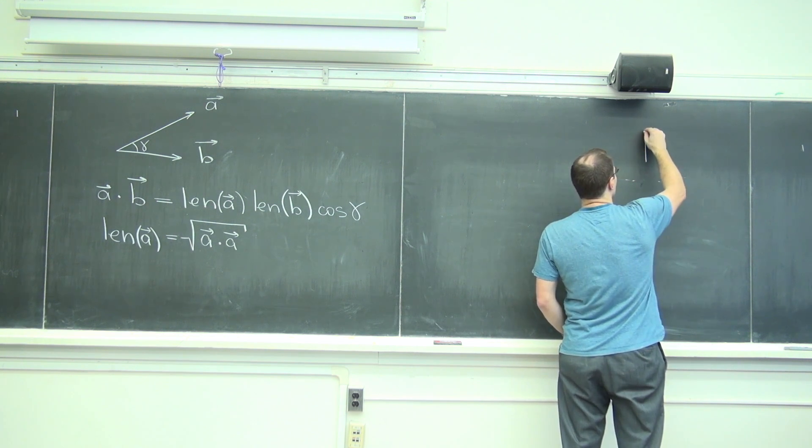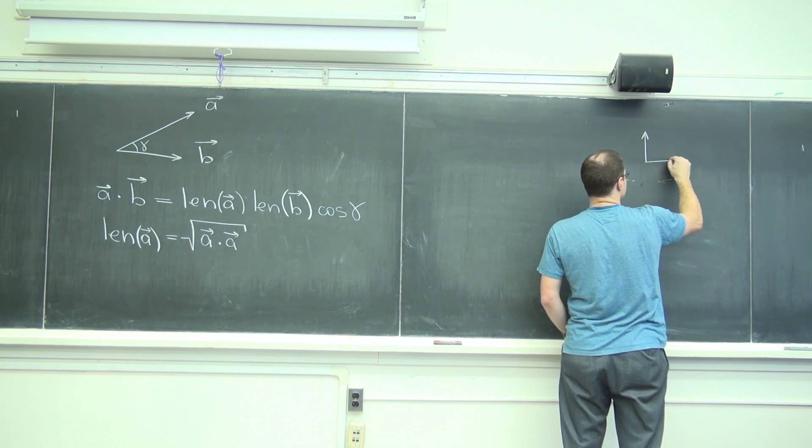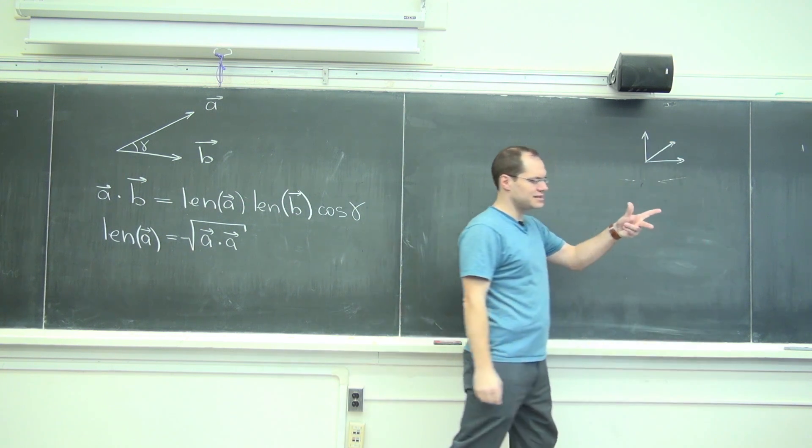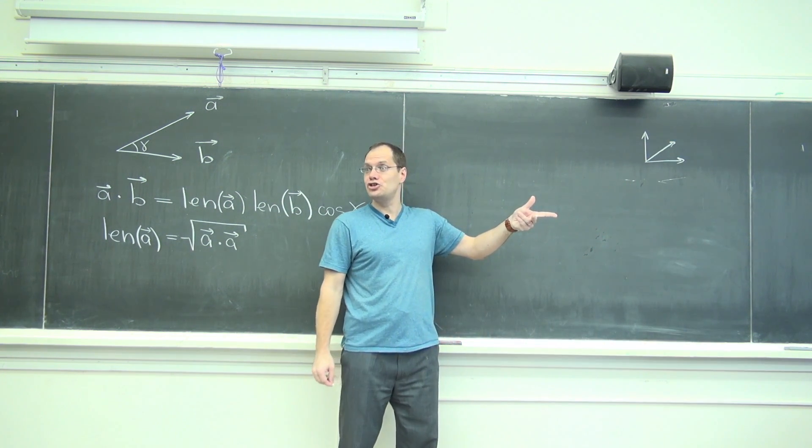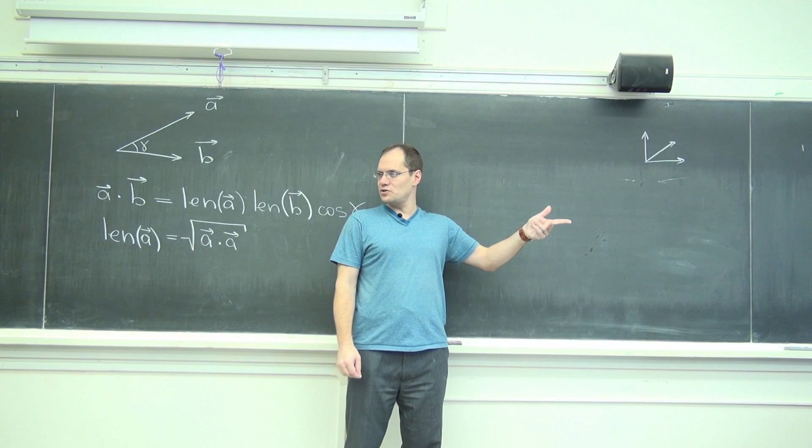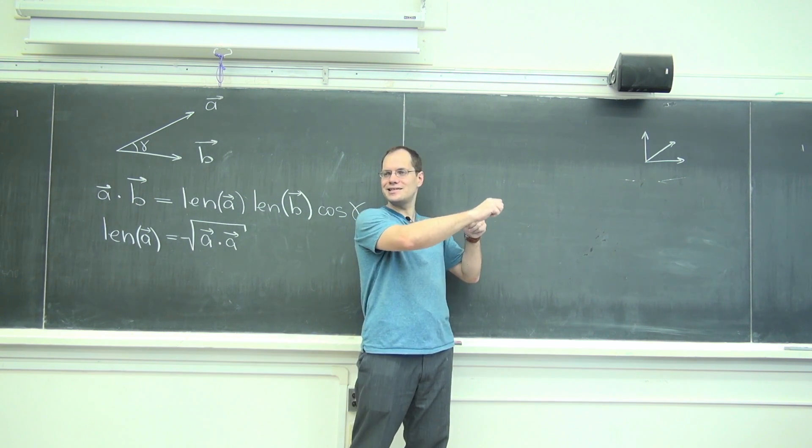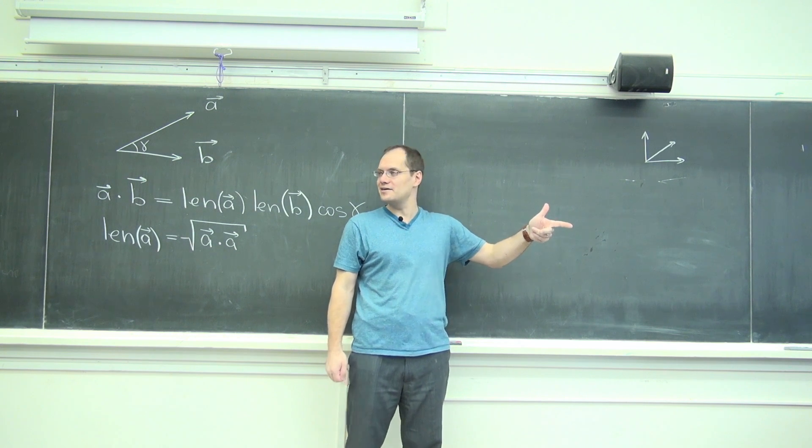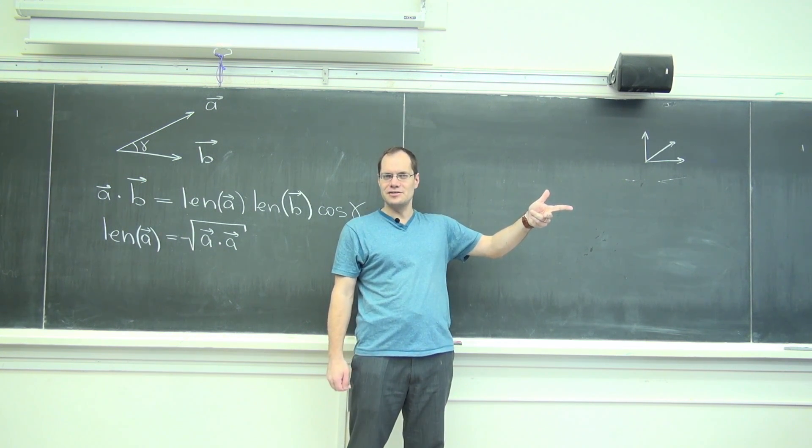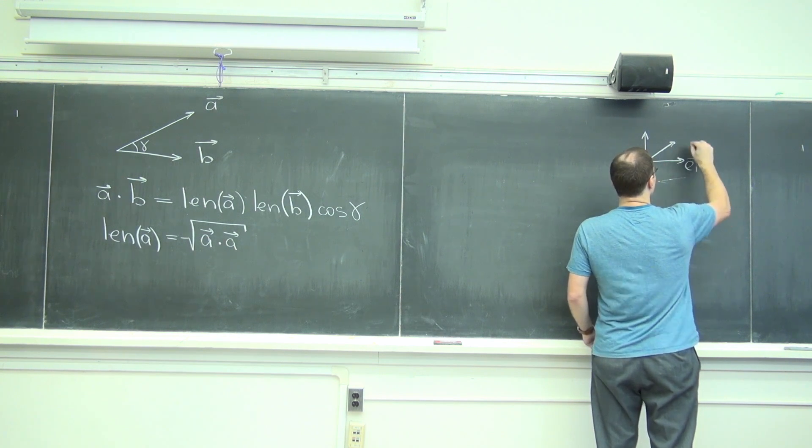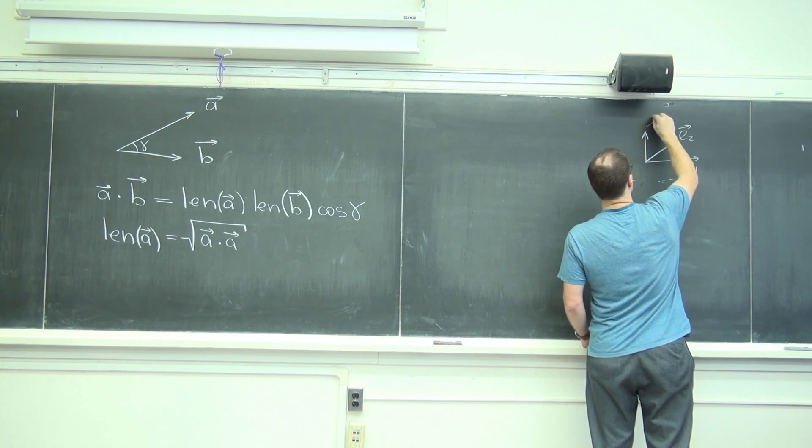I will pick what's called a Cartesian basis, an orthonormal basis, where all three vectors are unit length. Can I say unit length? Do I have length for geometric vectors? Yes, because I can take a tape measure and measure them. So they're all unit length and they're all 90 degrees, and they're called E1, E2, and E3.